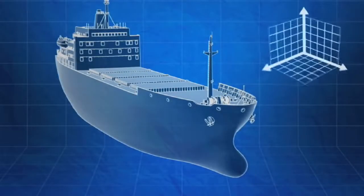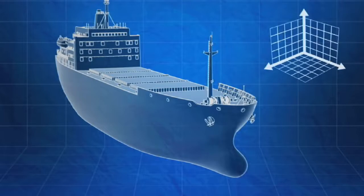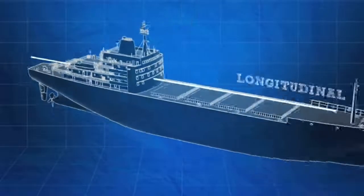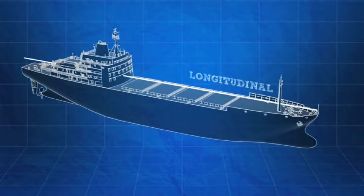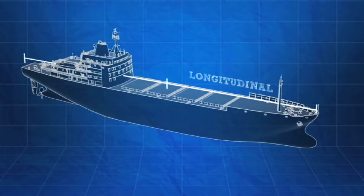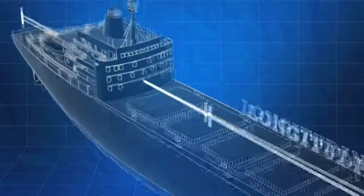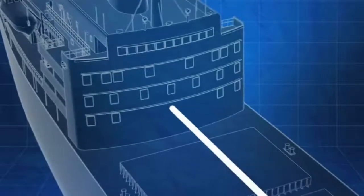Distances onboard ships are measured in one of three directions: longitudinally, transversely, and vertically. Longitudinal is the horizontal direction along the length of a ship. Longitudinal distances are measured from one of three places: the forward perpendicular, the aft perpendicular, or midships. Where longitudinal measurements are taken from will vary from ship to ship.